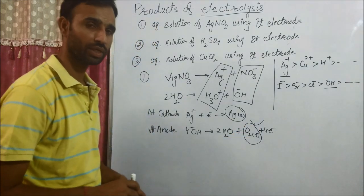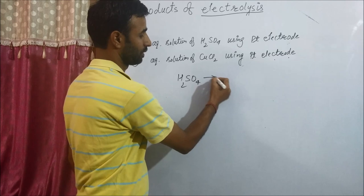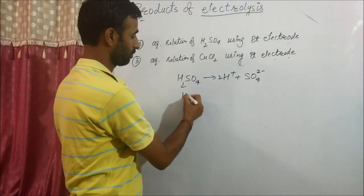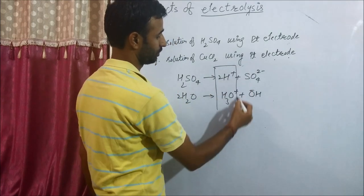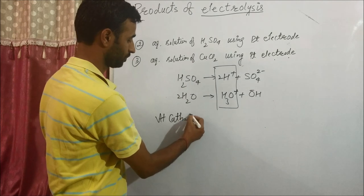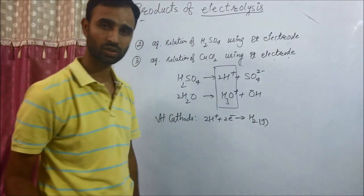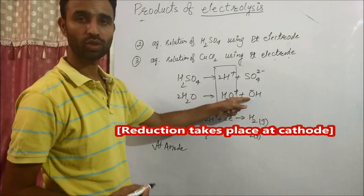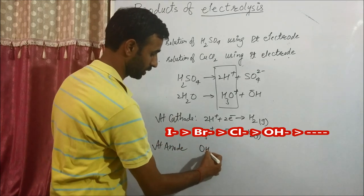Second: aqueous solution of H₂SO₄. H₂SO₄ gives H⁺ ions and sulfate ions; water gives H₃O⁺ and OH⁻. There is no competition at cathode — H⁺ ions are there, so H⁺ ion gains electron to give H₂ gas. At anode, out of sulfate and OH⁻ ion, OH⁻ ion will lose electron.